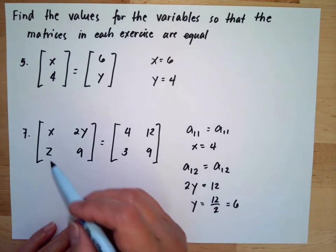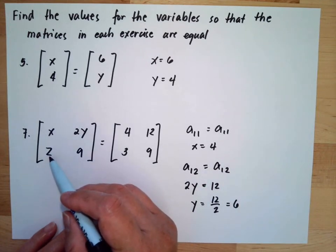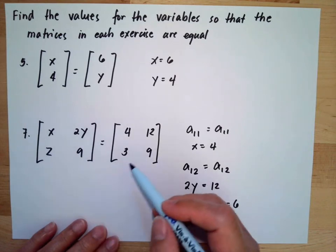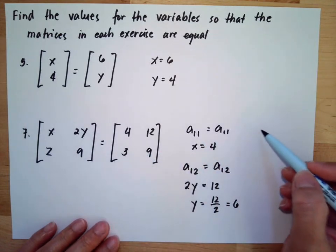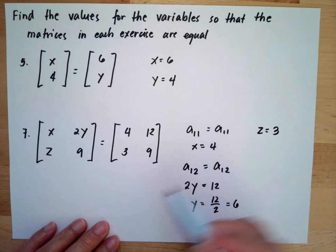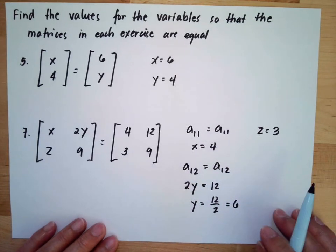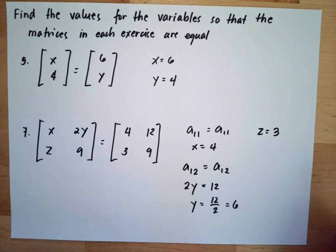Then the z, our row two and column one is z, and the same thing with three, so this will be equal to three, and this is how you will answer these problems.